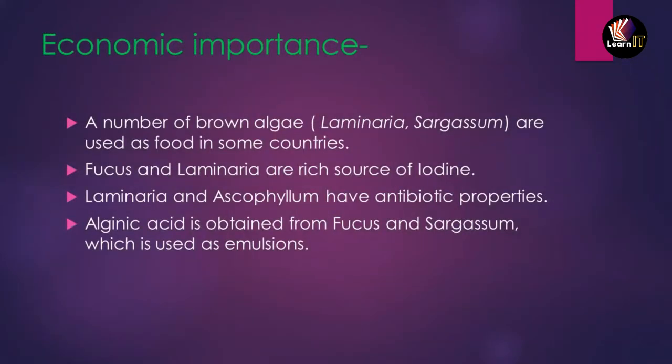Algae also have significant economic importance. Some brown algae are used as food in certain countries. Fucus and Laminaria are rich sources of iodine. Laminaria and Ascophyllum show antibiotic properties used in medicines. Alginic acid is obtained from Fucus and Sargassum and is used as an emulsion for paints.